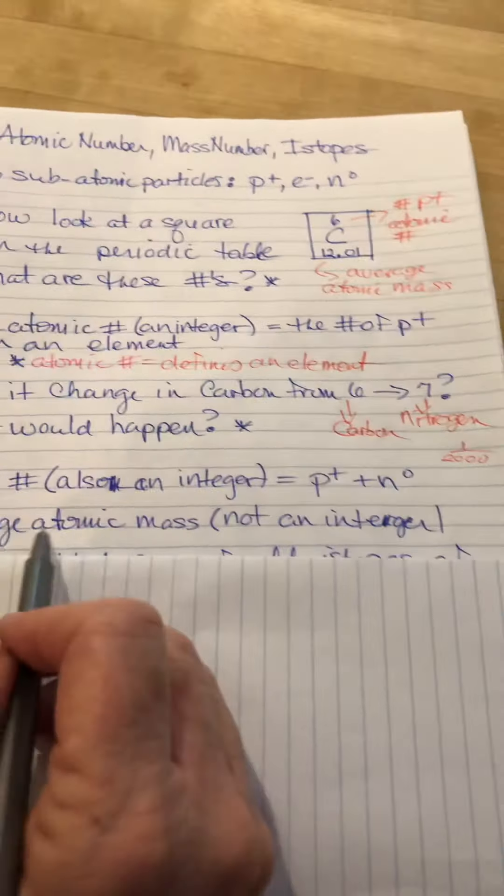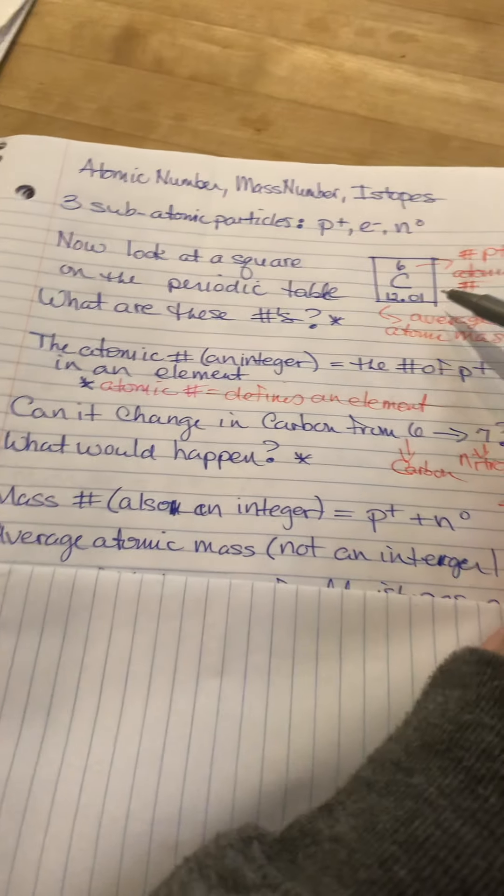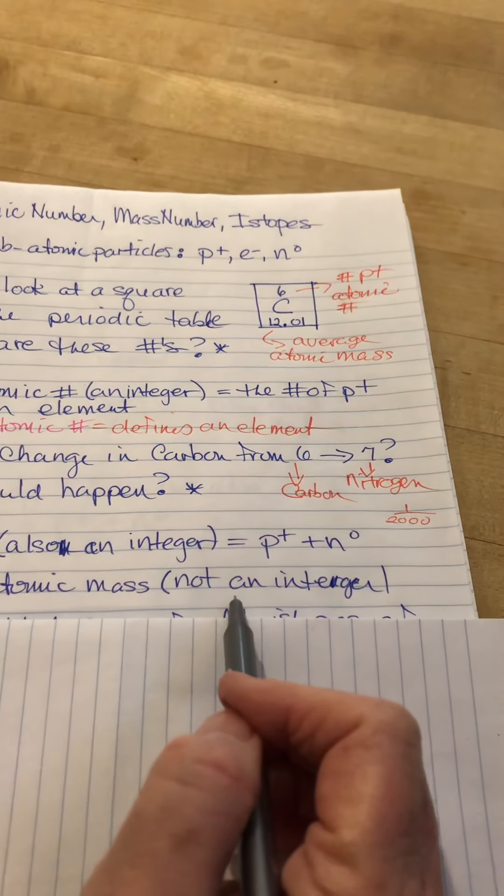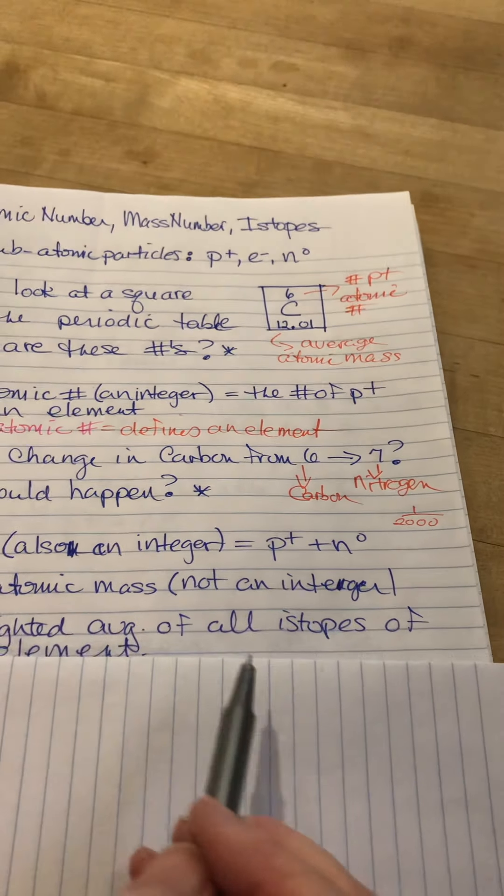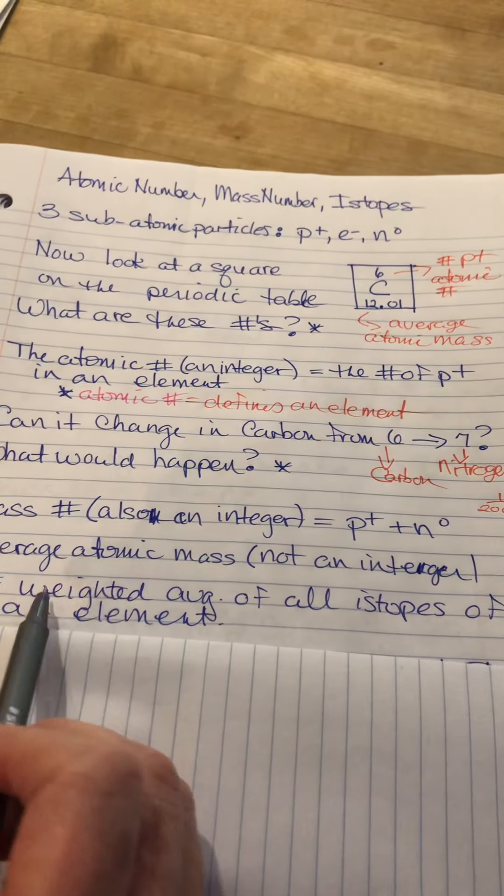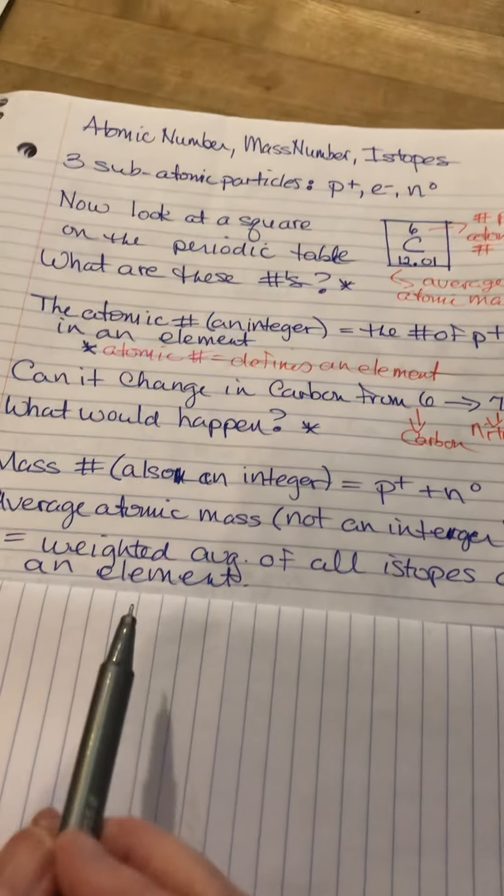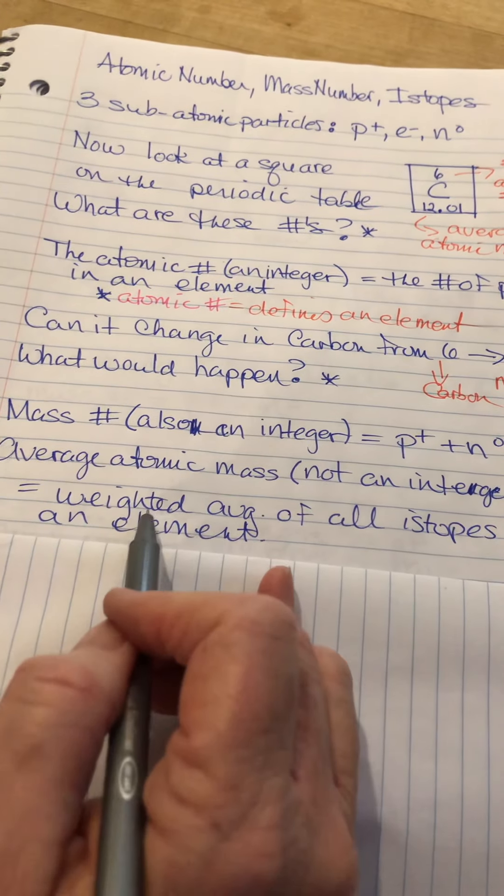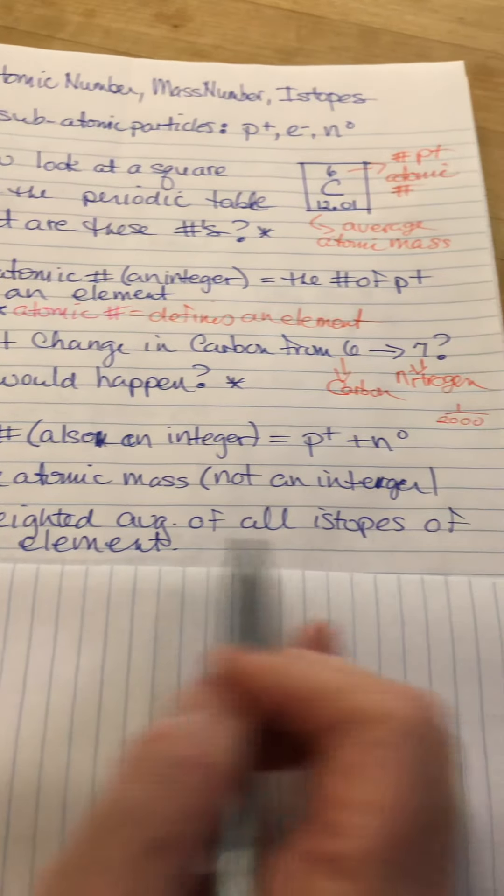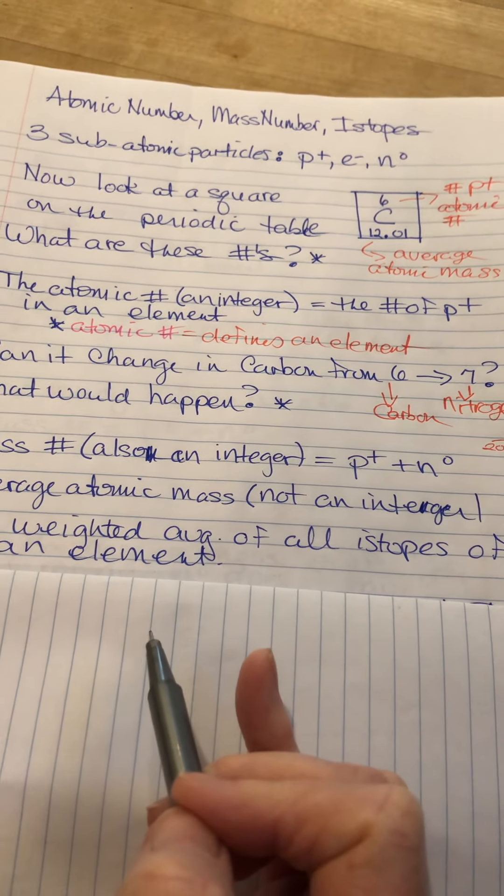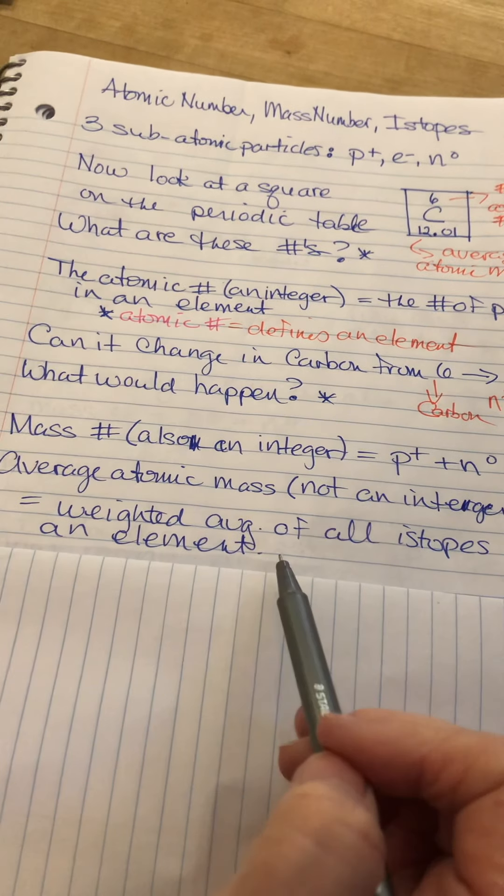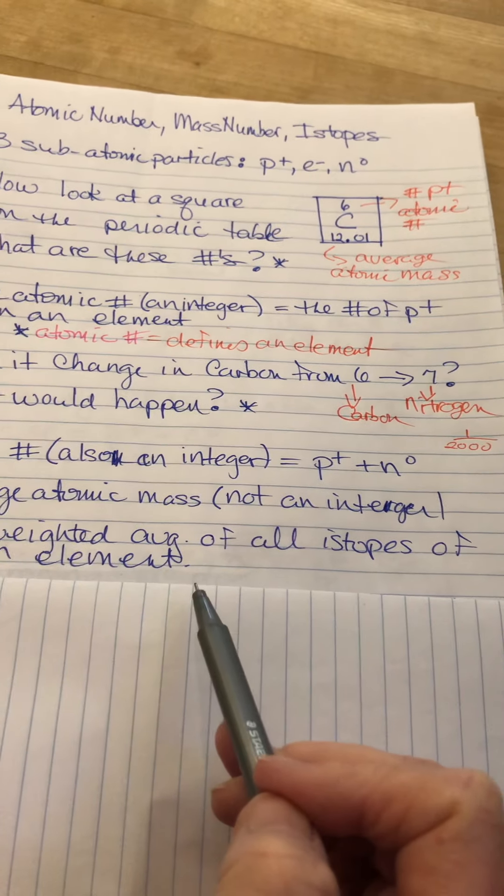The average atomic mass, this thing you saw up here, the 12.01, is not an integer. And it is, take a deep breath because you have a lot to write, the weighted average of all the isotopes of an element. Average atomic mass, the weighted average of all the isotopes of an element.